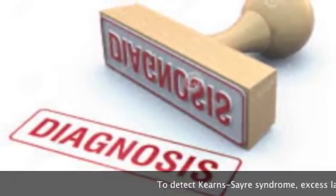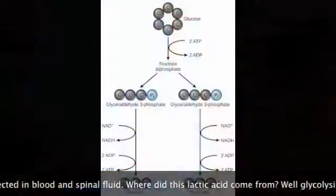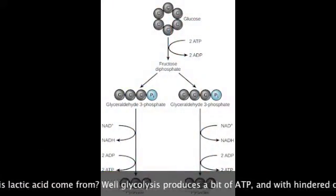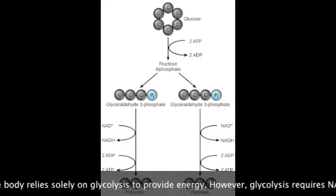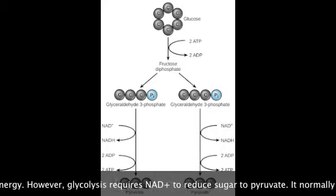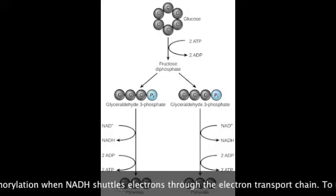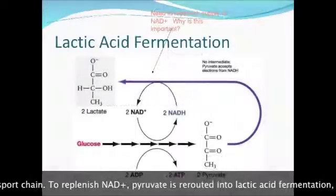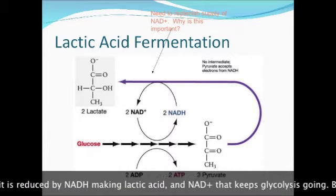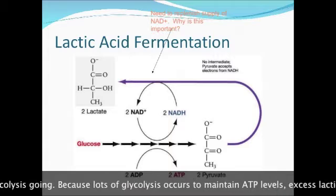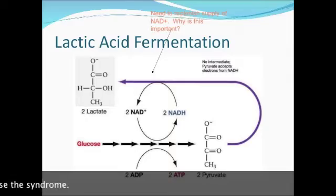To detect Kearns-Sayre syndrome, excess lactic acid can be detected in blood and spinal fluid. Where did this lactic acid come from? Glycolysis produces a bit of ATP, and with hindered oxidative phosphorylation, the body relies solely on glycolysis to provide energy. However, glycolysis requires NAD+ to reduce sugar to pyruvate, which normally comes from oxidative phosphorylation when NADH shuttles electrons. To replenish NAD+ without oxidative phosphorylation, pyruvate is rerouted into lactic acid fermentation, where it is reduced by NADH, making lactic acid and NAD+ that keeps glycolysis going. Because lots of glycolysis occurs to maintain ATP levels, there is a large excess of lactic acid.